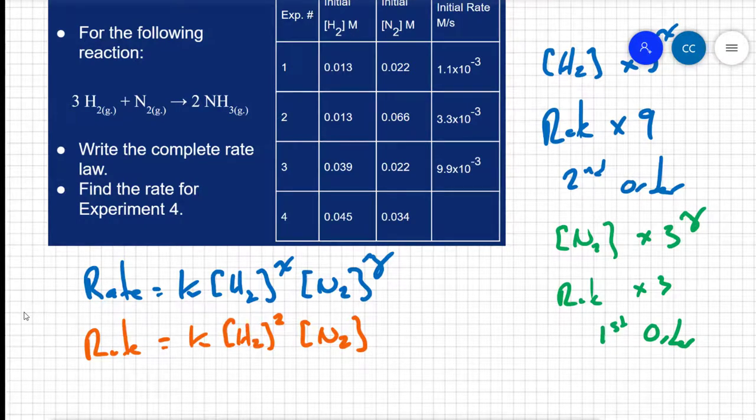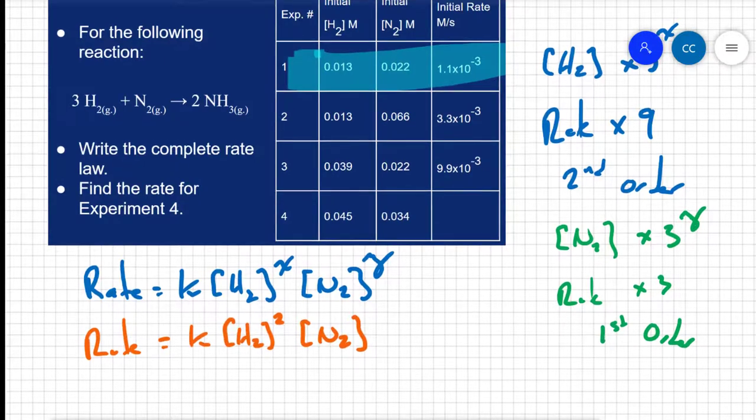It doesn't matter which reaction you use because K is a constant under these conditions. So I generally just take first data set right here.